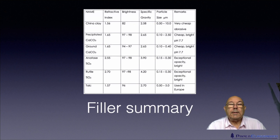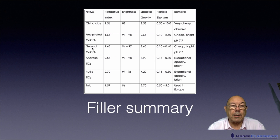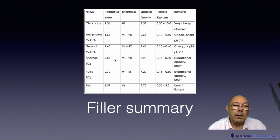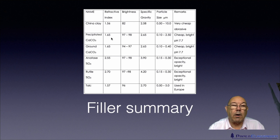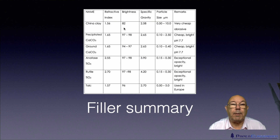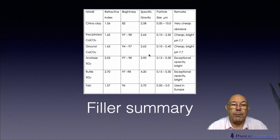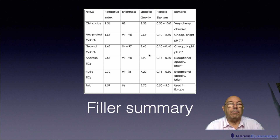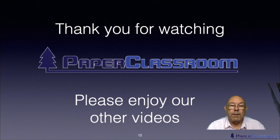To finish, here's a summary of the fillers: china clay or kaolin, precipitated calcium carbonate, ground calcium carbonate, the two forms of TiO2, and talc. Looking at the refractive index and light scattering power, TiO2 is 2.55 and 2.7 — way above everything else; the nearest is 1.65 from precipitated calcium carbonate. They're all relatively good brightnesses apart from clay, which is in the 80s, while everything else is in the 90s. Well, I certainly hope you've enjoyed this session on fillers — thank you for watching and I look forward to seeing you in another one of my videos.